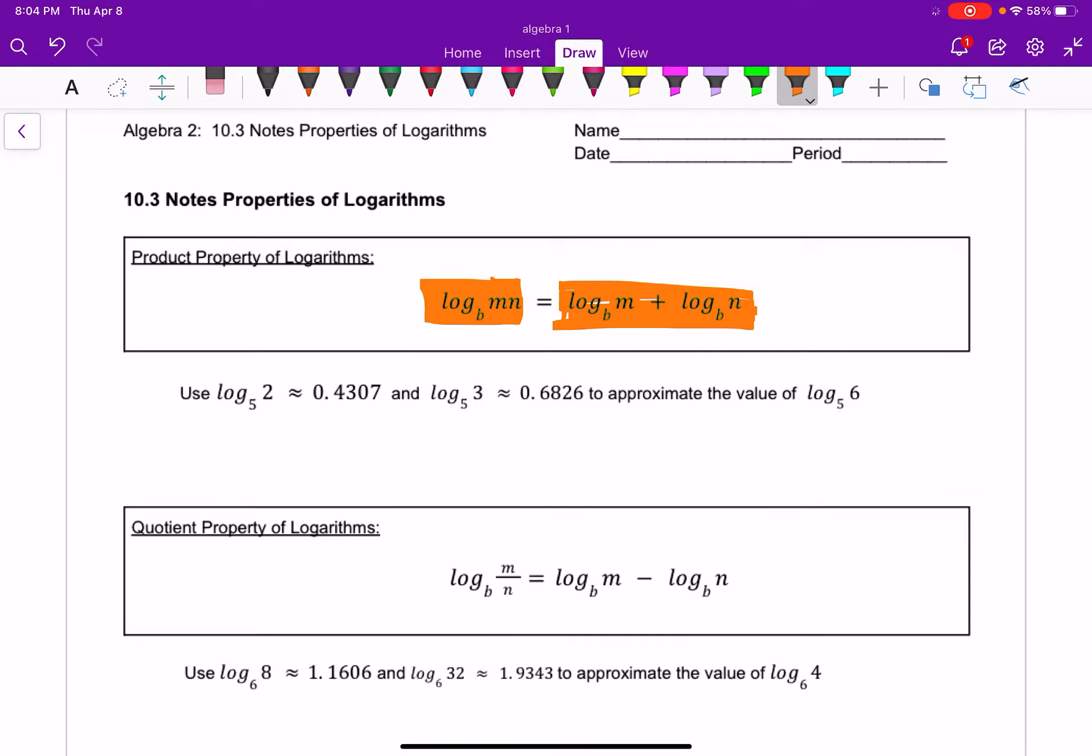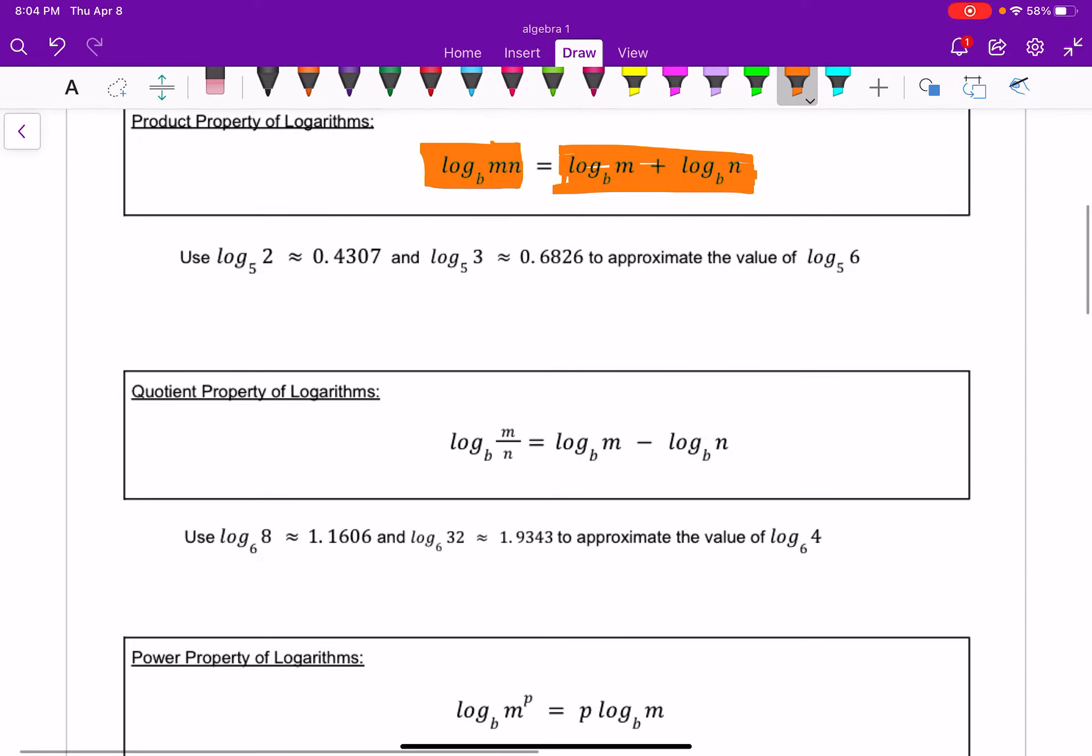So here's, let me show you how to do this one. So we have an approximation here of this and this. And I want to know, what's log base 5 of 6? So log base 5 of 6, I have to figure out a way to make log base 5 of 6 into 2 and 3 somehow. So this is what I'm going to do.